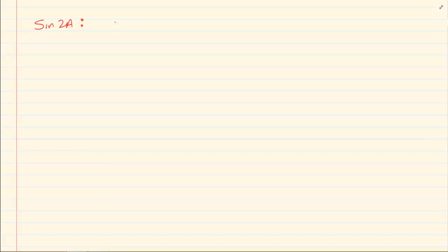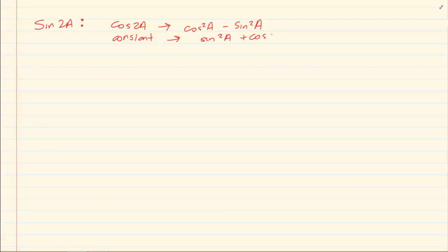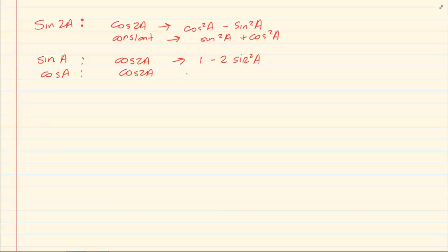Number one, if you see a sin2a in the question then any cos2a you must use the expansion of cos squared minus sin squared. Also any constant must be changed to sin squared plus cos squared. If you see a sin a in the question then any cos2a must be changed to 1 minus 2 sin squared a. If you see a cos a in the question then you would change your cos2a into 2 cos squared a minus 1.